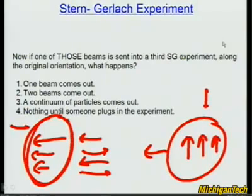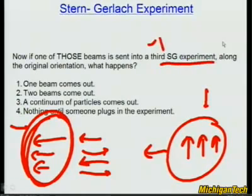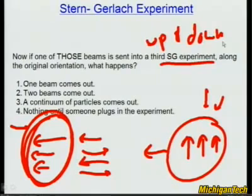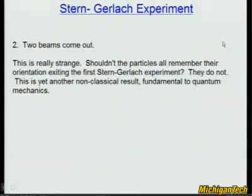These particles were all measured as spin left in the second device. Now we send one of those beams into a third up-down oriented Stern-Gerlach device. What happens? Do you get one beam out, because they were all spin up to begin with? Do two beams come out because some are spin up and some spin down? Or a continuum? The answer — drum roll please — two beams come out.